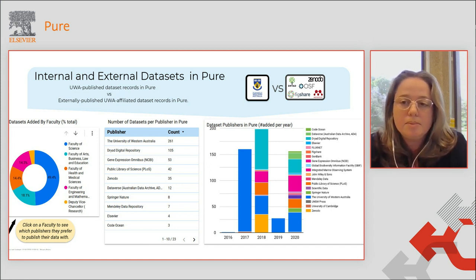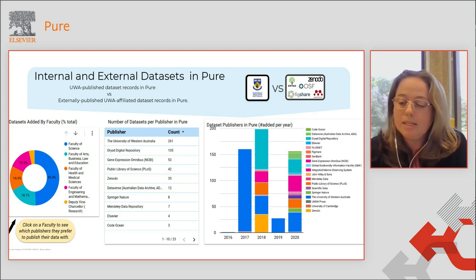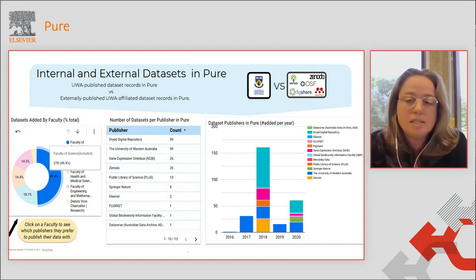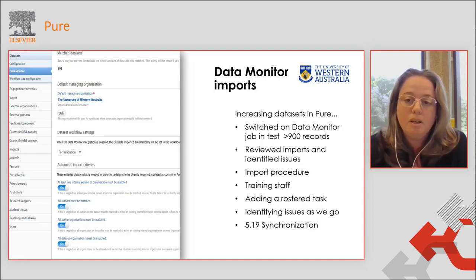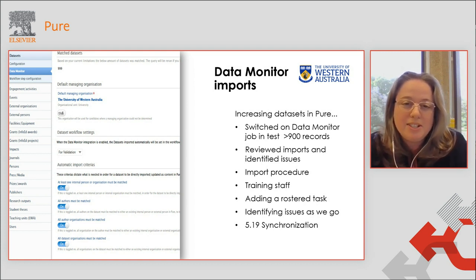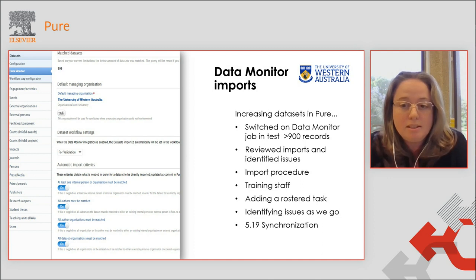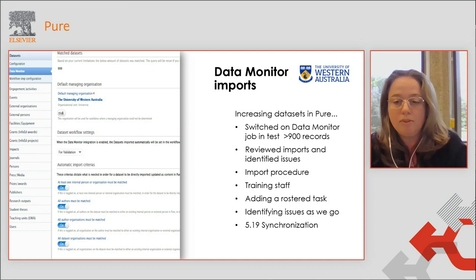In 2020 we began scouring for externally published datasets in well-known data repositories that were affiliated with UWA publications. We tried using both API queries and manually searching the repository websites. We were then able to pull out reports to visualize which repositories faculties preferred to publish in, and fed that back to our liaison librarians, which could be really useful when discussing dataset deposits with researchers. We decided to test out data search, now data monitor, and found that this service located several hundred UWA-affiliated datasets. We were very pleased and very happy with data monitor.